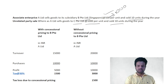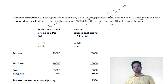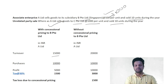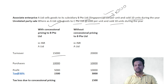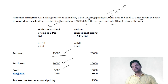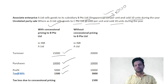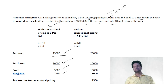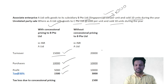We will see how the P&L extract looks at year end — with concessional pricing versus without concessional pricing. With concessional pricing to BPT Limited, the total turnover is 15,000: that is 500 into 10 units = 5,000, plus 1,000 into 10 units = 10,000. Purchases, taking a round number, is 10,000, so profit is 5,000. At a 30% tax rate, tax paid is 1,500.